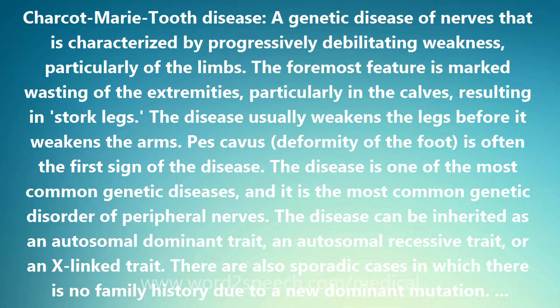The disease can be inherited as an autosomal dominant trait, an autosomal recessive trait, or an X-linked trait. There are also sporadic cases with no family history, due to a new dominant mutation. Abbreviated CMT, also known as peroneal muscular atrophy and hereditary motor and sensory neuropathy.